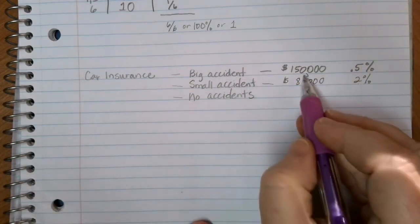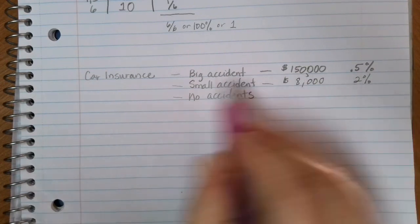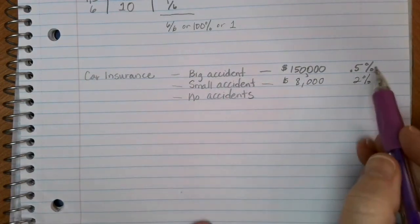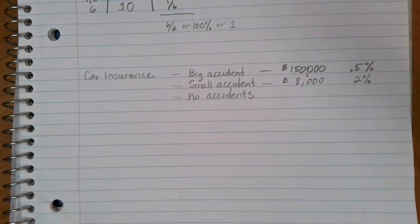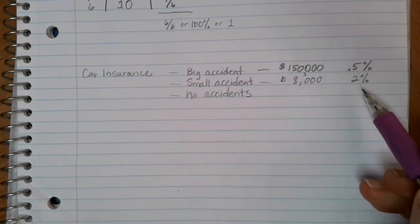In the last case, these are our dollar values that the insurance company would have to pay out based on these types of percentages of occurrence.